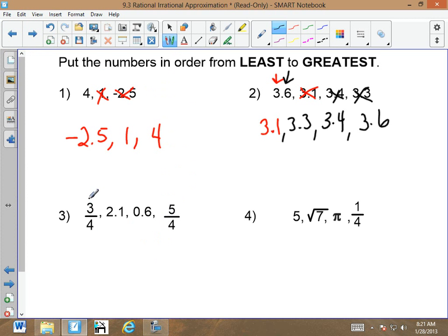Now, I'm going to tell you, convert your fractions to decimals. 3 over 4 is actually 0.75. Very good. And what is 5 fourths? 1 point what? Very good.